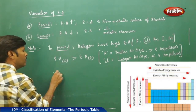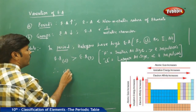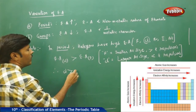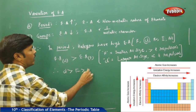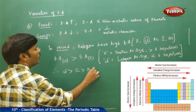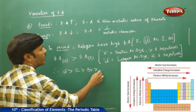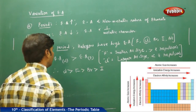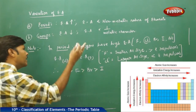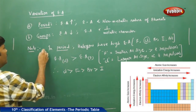So the overall order is: chlorine has more electron affinity than bromine, which has more electron affinity than iodine. Astatine is a radioactive element.